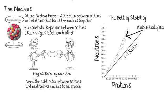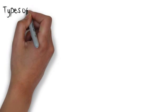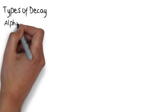So if you're not in this belt of stability, if you're an element and you're not in this belt of stability, then you're going to undergo some sort of decay to get to a stable isotope. And there are several different types of decay.